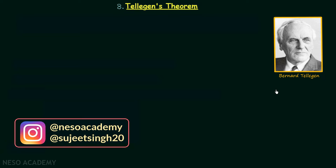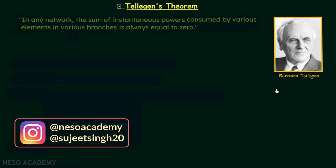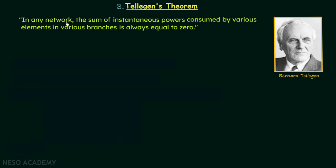To understand this theorem we will first understand its statement: In any network — linear, non-linear, unidirectional, bidirectional, time-variant, or time-invariant — the sum of instantaneous powers consumed by various elements in various branches is always equal to zero. The statement is very simple to understand.